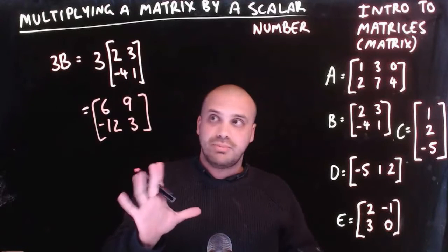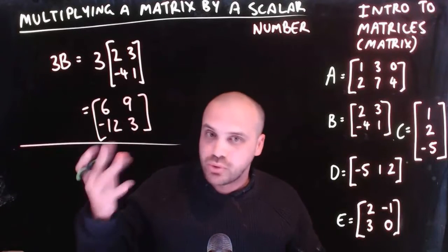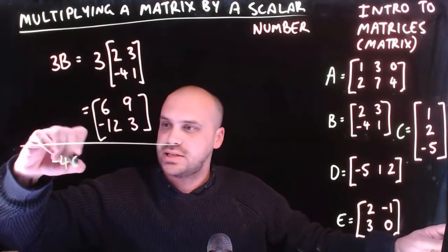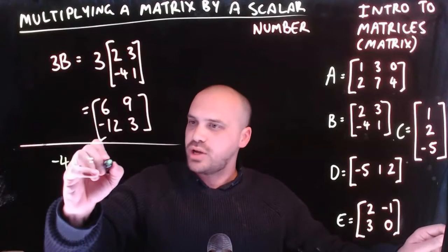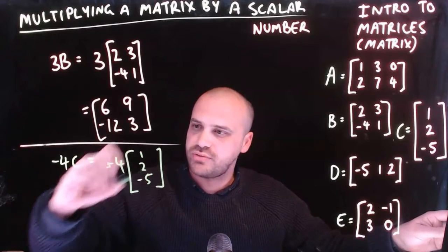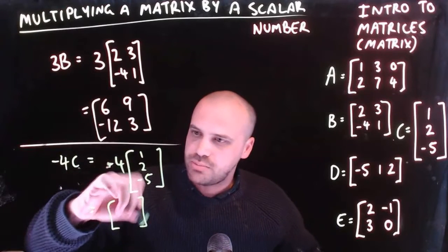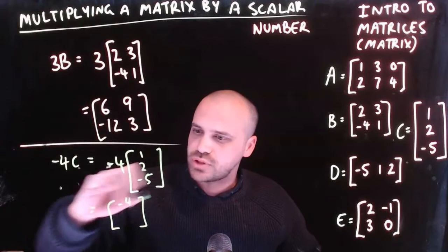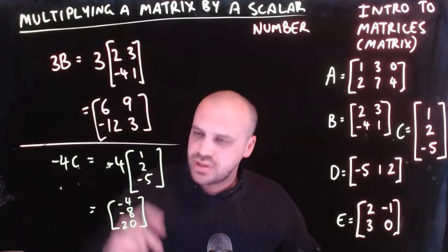One more example: negative 4C. Negative 4 times matrix C, which is [1, 2, -5]. We multiply every element by negative 4. Negative 4 times 1 is negative 4. Negative 4 times 2 is negative 8. And negative 4 times negative 5 is positive 20.